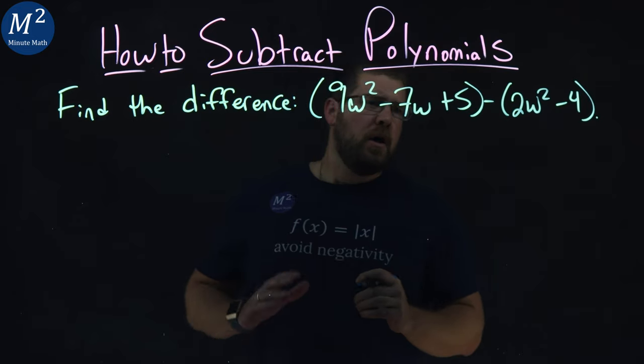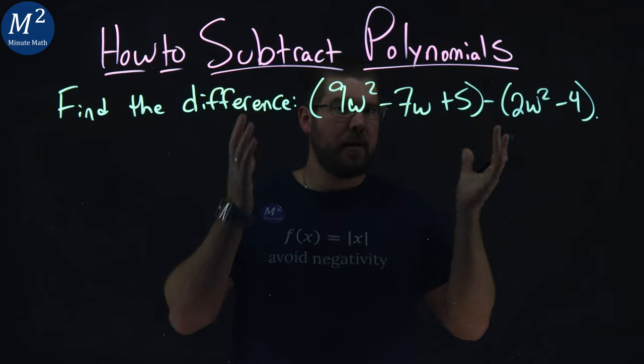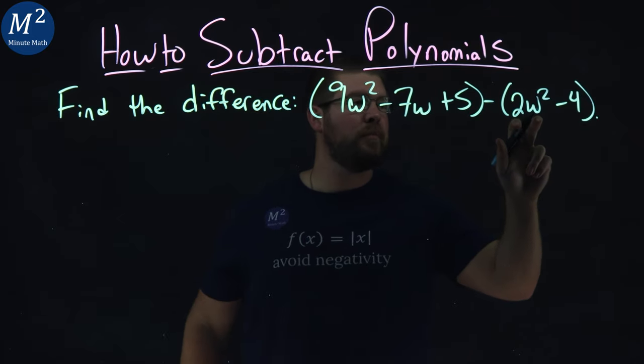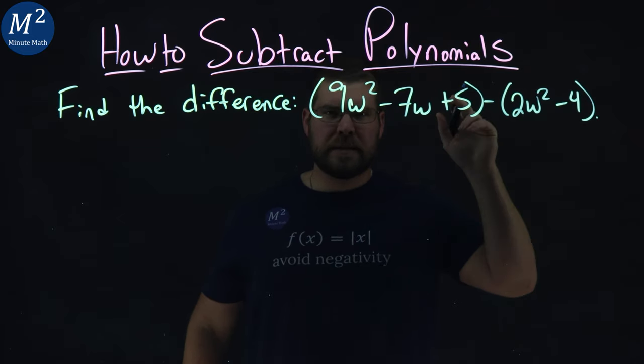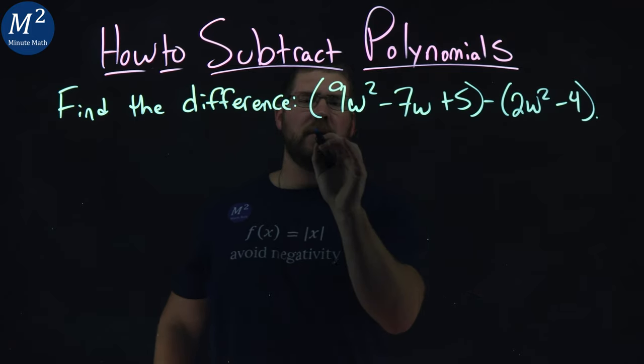Now, we have that subtraction going on here, so what I'm going to do first is distribute this minus sign to both parts. It makes it a little easier. So instead of subtracting the whole polynomial, I can rewrite it here.